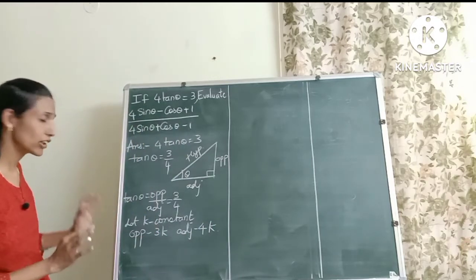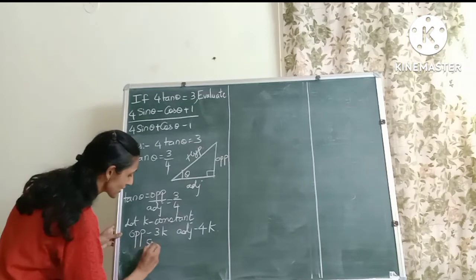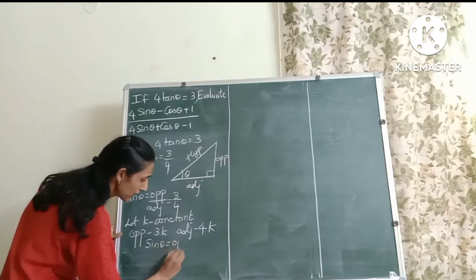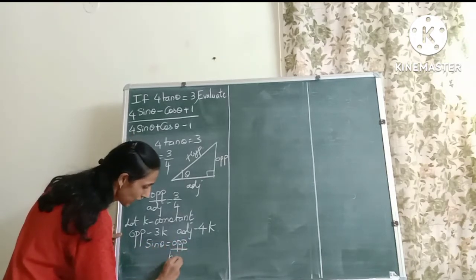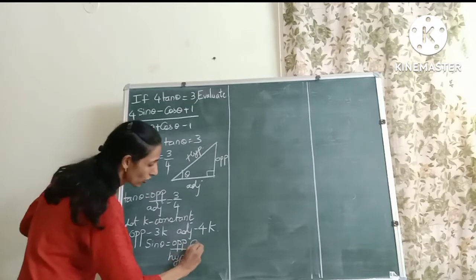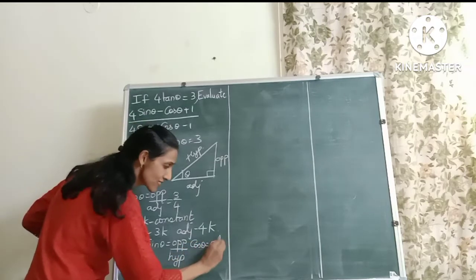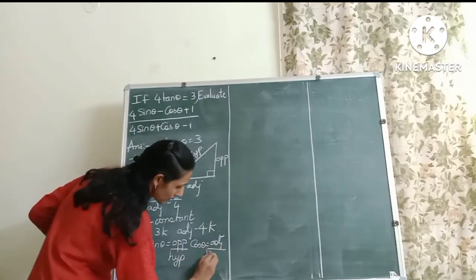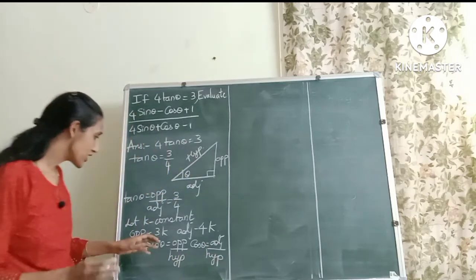Now friends, let's also write what are sin θ and cos θ formulas. So sin θ will be, can you tell me? Yes, the opposite upon the hypotenuse side. And cos θ will be adjacent upon the hypotenuse side.